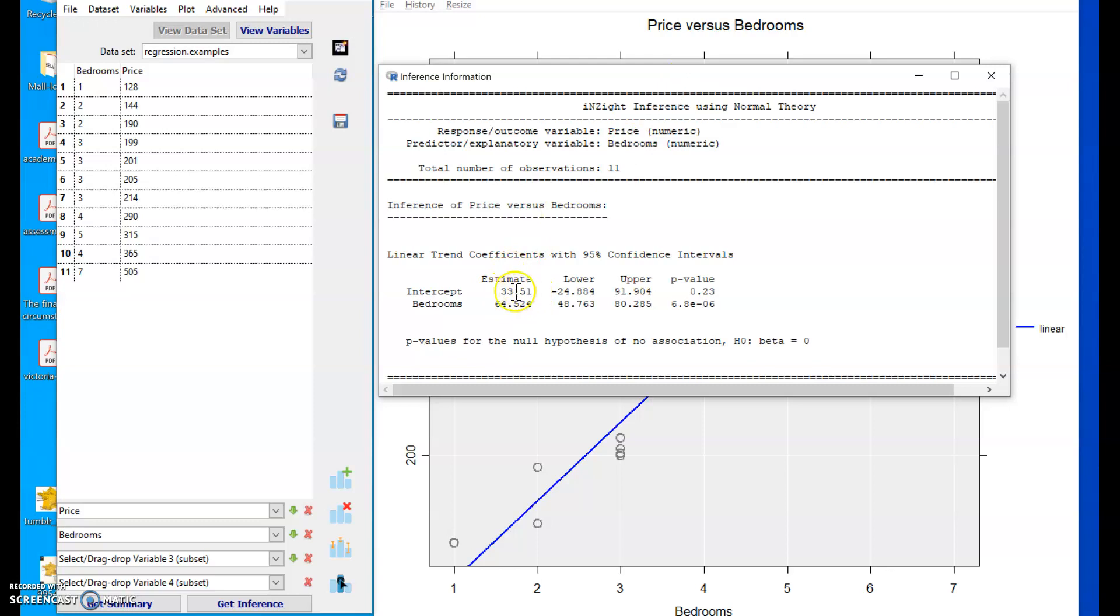It estimates the intercept and the slope coefficient, gives 95% confidence intervals for each of those based on a t distribution with n minus 2 degrees of freedom.